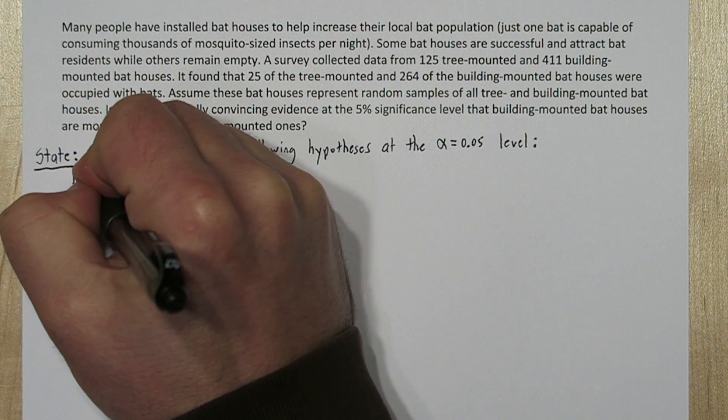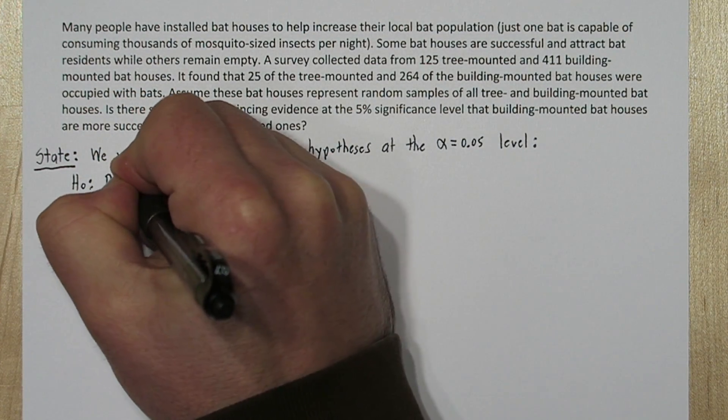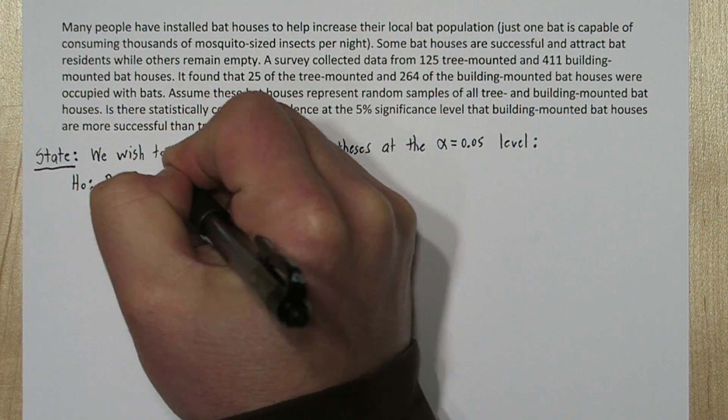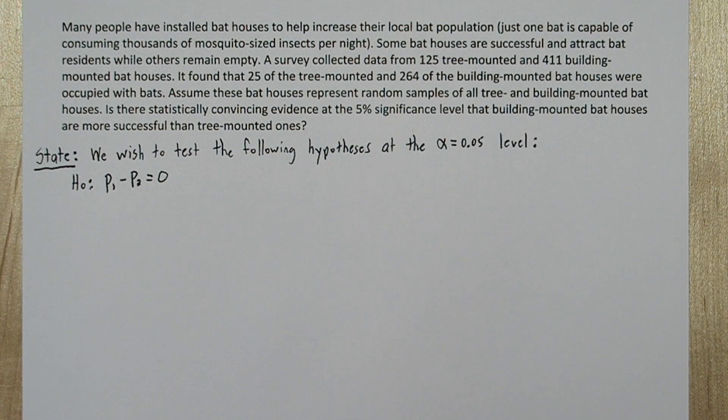Our null hypothesis is P-sub-1 minus P-sub-2 equals zero. In other words, there's no difference between the proportions.